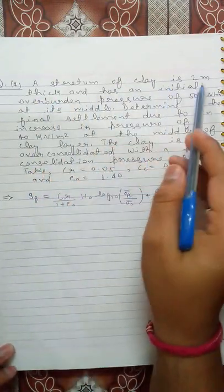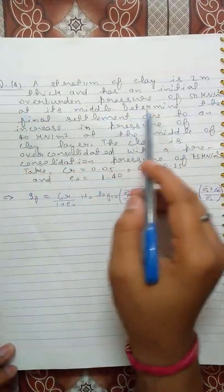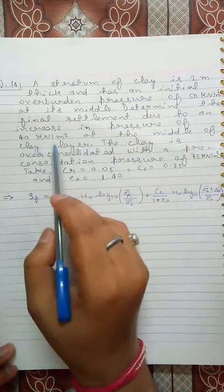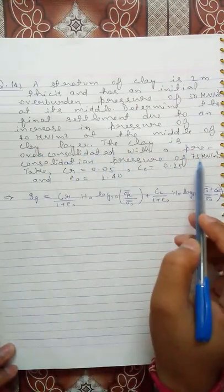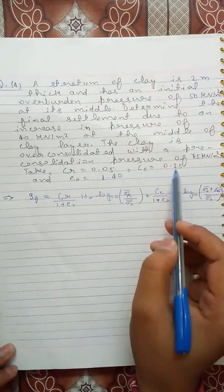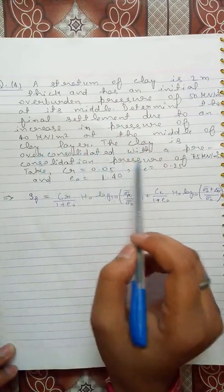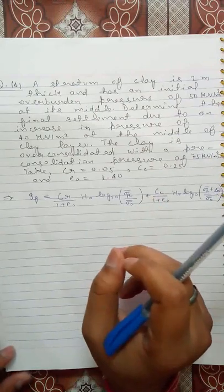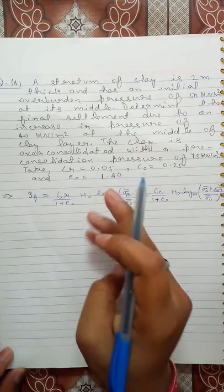The next problem: A stratum of clay is 2 m thick and has an initial overburden pressure of 50 kN/m² at its middle. Determine the final settlement due to an increase in pressure of 40 kN/m² at the middle of the clay layer. The clay is over-consolidated with a pre-consolidation pressure of 75 kN/m². Given: Cr = 0.05, Cc = 0.25, e₀ = 1.40. We must check which of the two over-consolidated cases applies.